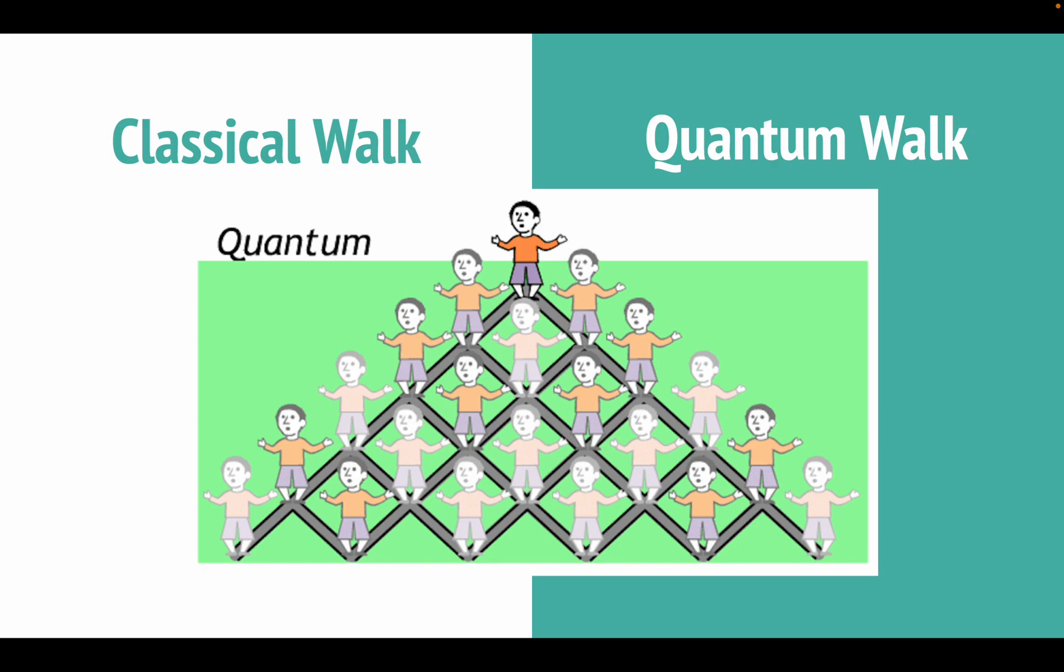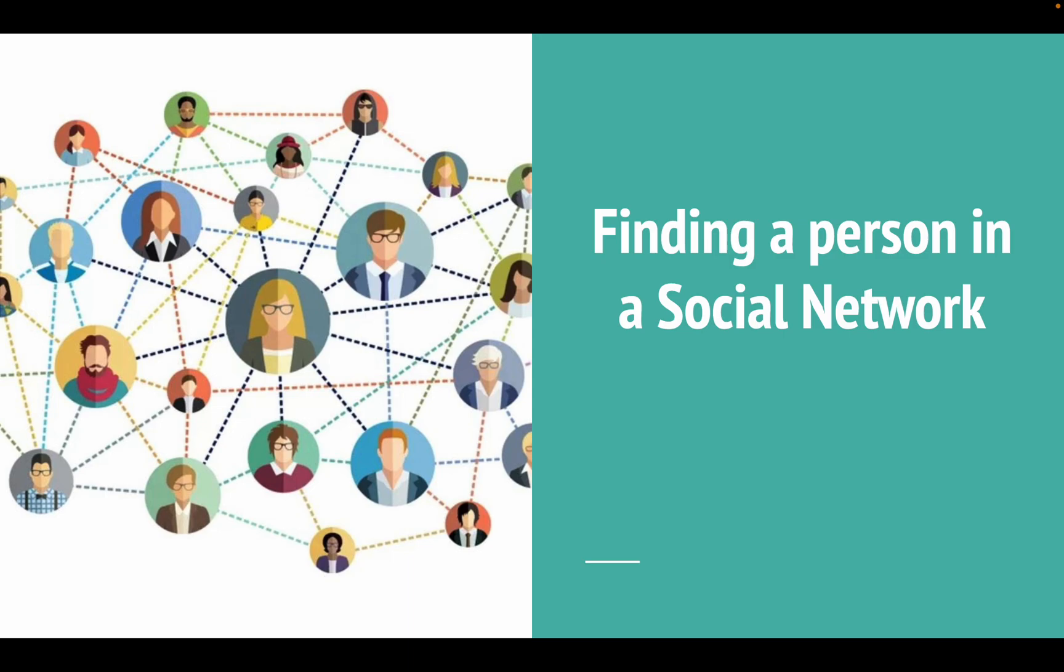Now, let's head to a more specific example. Supposing we have a social network of people, where each person represents a node in a network, and the edges here represent their social connections. In this network, we could use a quantum walker to search for a specific person in the network.